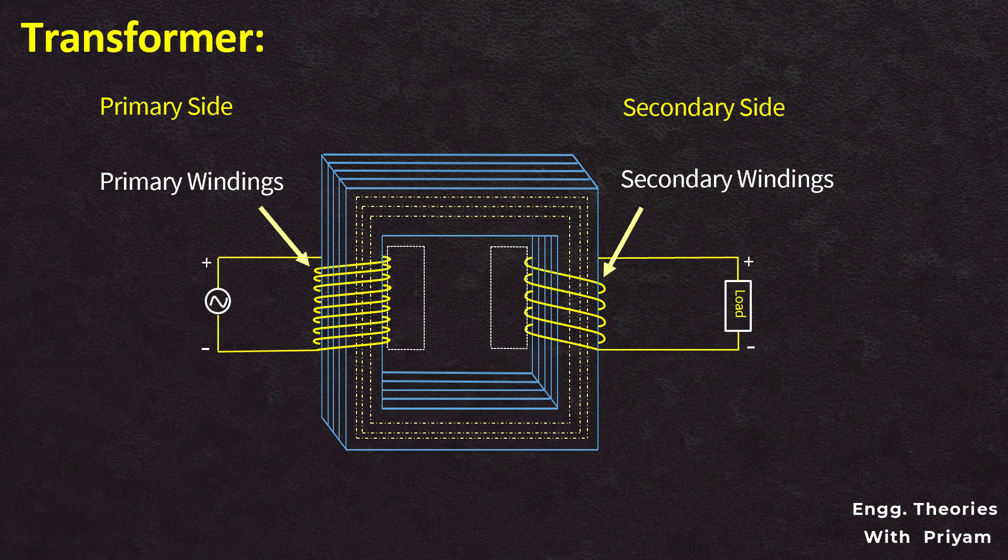When the alternating current flows through the primary winding of a transformer, it generates a magnetic field that induces a corresponding flux. This flux is designed to be linked with the secondary winding, resulting in a power transfer between the two windings.